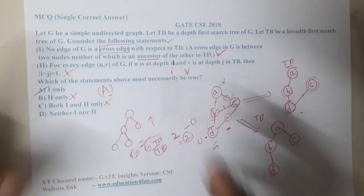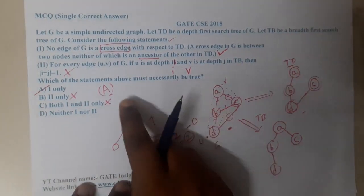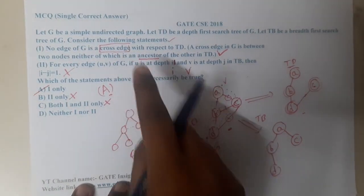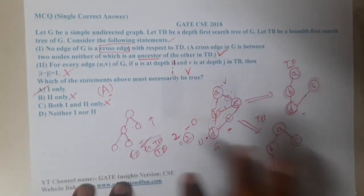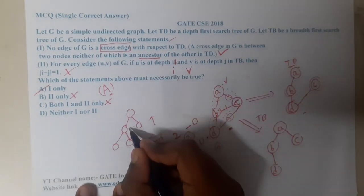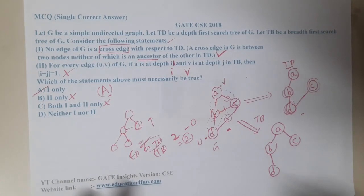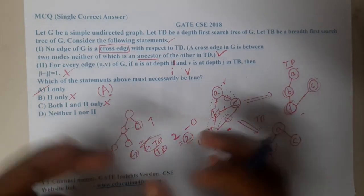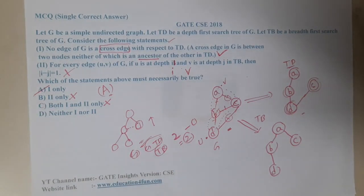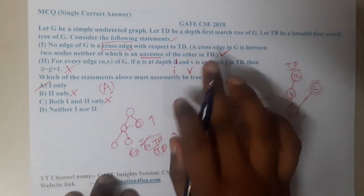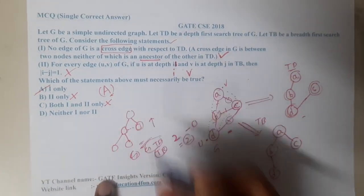If you did not get a clear idea, please watch some other videos. My understanding of cross edges: there is an edge between two nodes, and for it to be a cross edge, neither of them should be an ancestor of the other. So option A should be the correct answer.